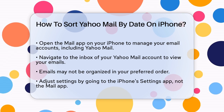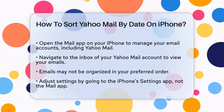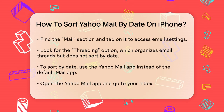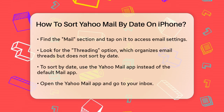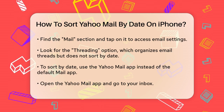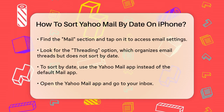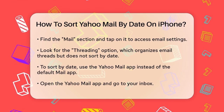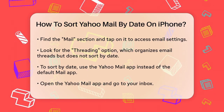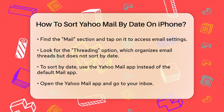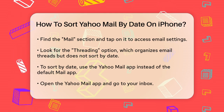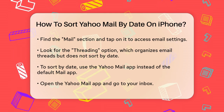Here, you'll see all your emails listed, but they might not be in the order you want. To sort these emails by date, you need to adjust the settings. Go to your iPhone's Settings app, not the Mail app itself. Scroll down and find the Mail section. Tap on Mail, and then look for the option labeled Threading. Here, you can choose how you want to organize your email threads. However, this doesn't directly sort emails by date.